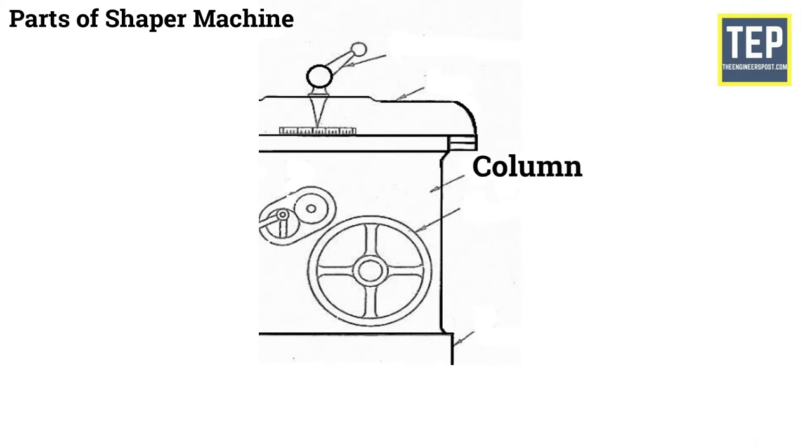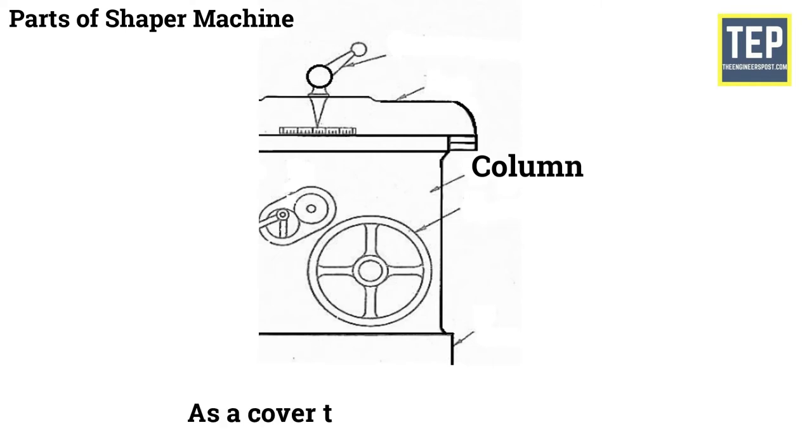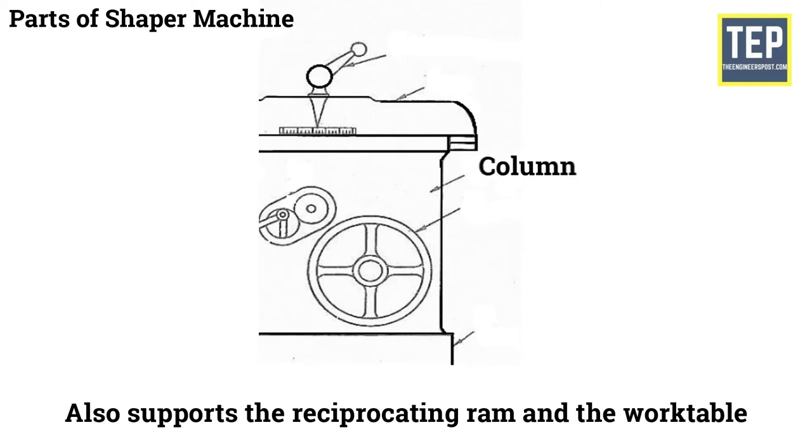Column is made of cast iron, which is a box like and is mounted on the base. Two accurately machined guideways are provided on the top of the column on which the RAM reciprocates. The column acts as a cover to the drive mechanism and also supports the reciprocating RAM and the work table.